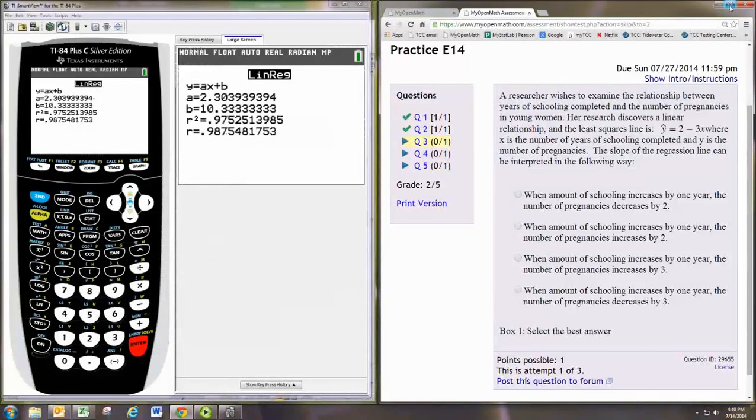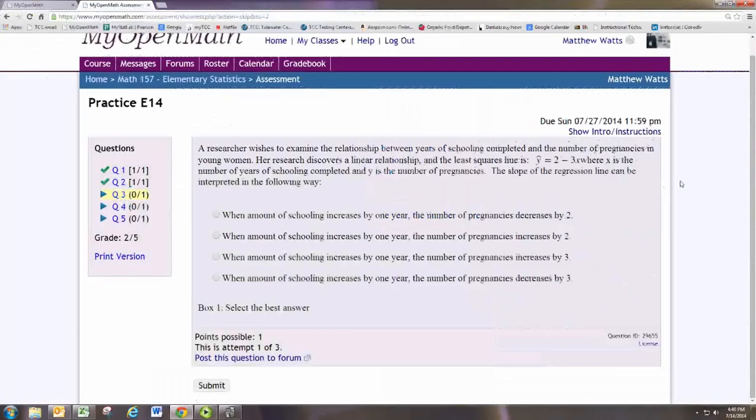In this video we look at practice problem E14. A researcher wishes to examine the relationship between years of schooling completed and number of pregnancies in young women. Her research discovers a linear relationship and the least squares line is y hat equals 2 minus 3x, where x is the number of years of schooling completed and y is the number of pregnancies.